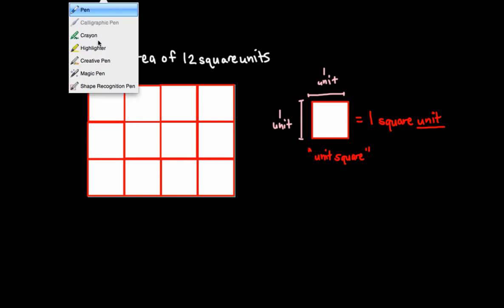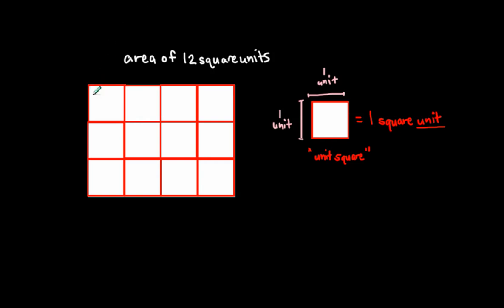Now, this right here is what we call our unit square. If I can cover a plain figure, a flat shape, with unit squares, the number of unit squares that I actually place down to cover the entire shape will also tell me what the area is.